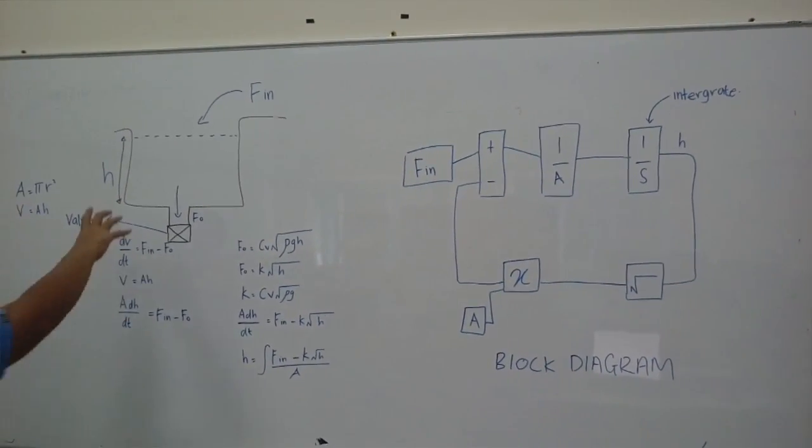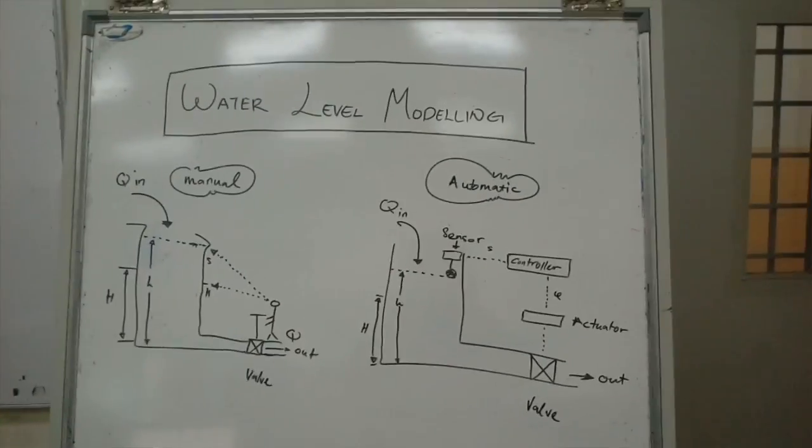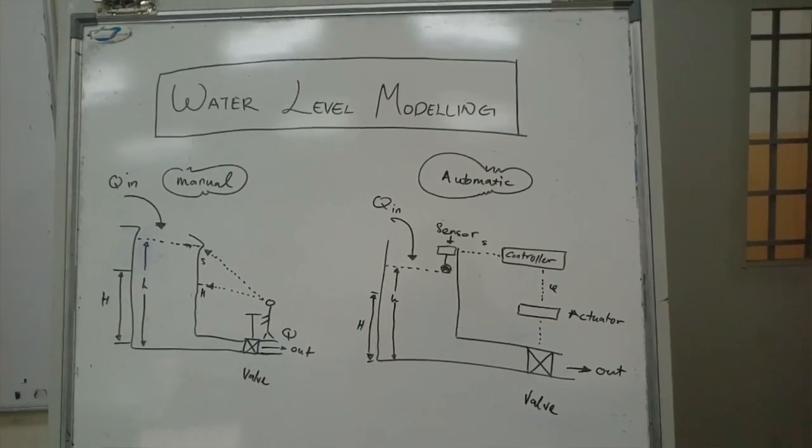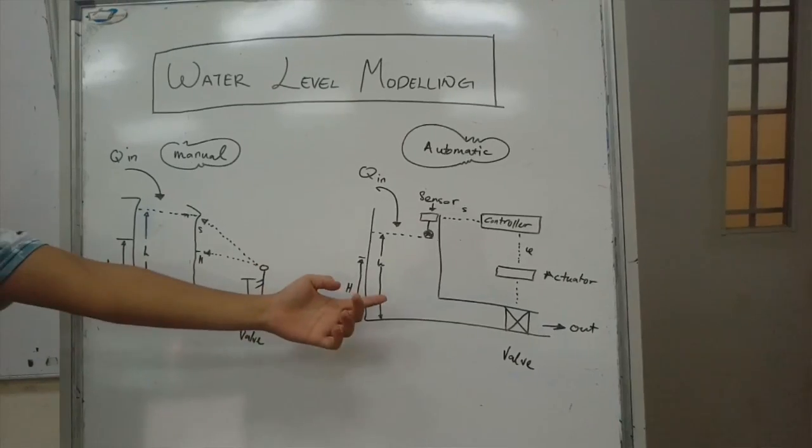This is for analog and digital water level modeling. Next, there are two methods to control the water level. First, the manual, and second, the automatic.